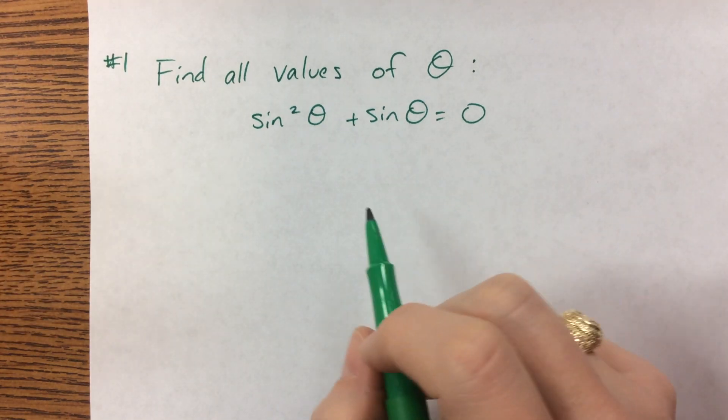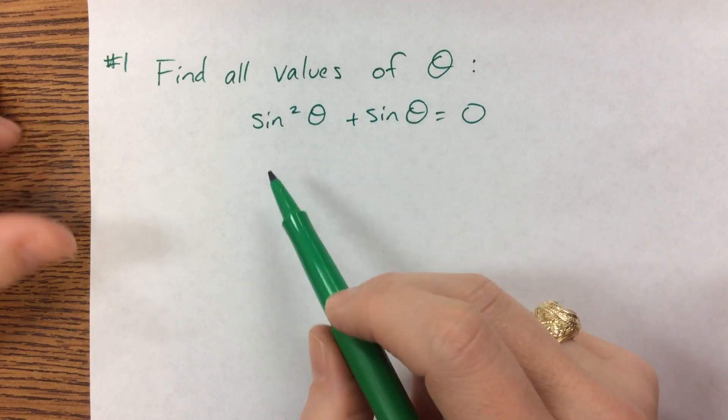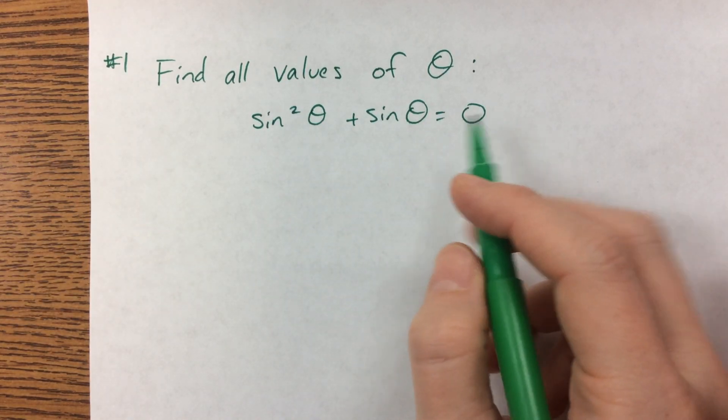Here's our first example of solving a trigonometric equation. They're asking us to find all values of theta, and they've given us sine squared theta plus sine theta is equal to zero.